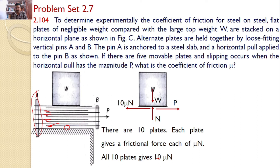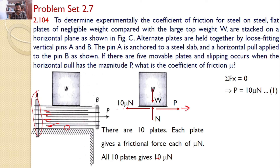There is an applied force P acting horizontally. Considering the free body diagram and applying equilibrium conditions: sigma Fx equals 0 gives P equals 10 mu times n, since P acts towards the right and mu n acts towards the left. Applying sigma Fy equals 0 gives W equals n, since W acts downwards and n acts upwards.